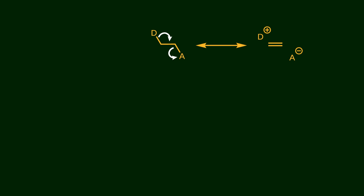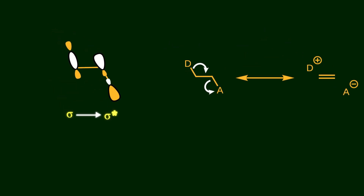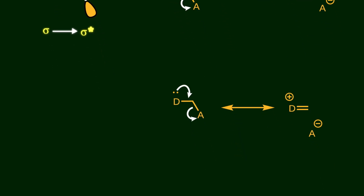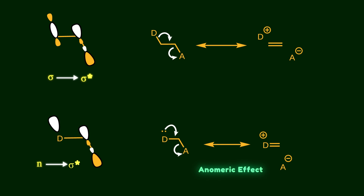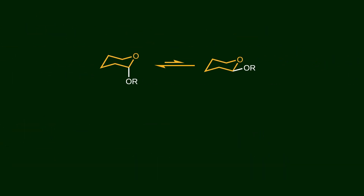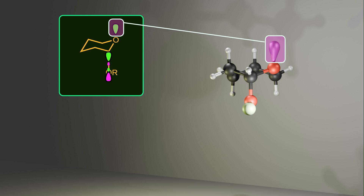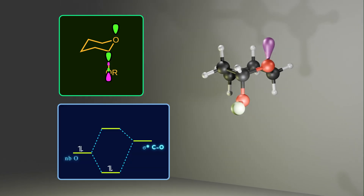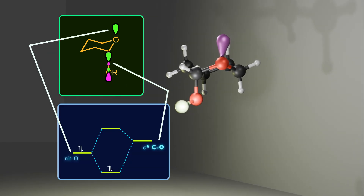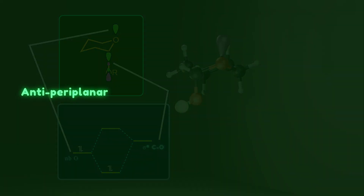Until now, we've understood stereoelectronic effects where electrons in a bond interact with an anti-bonding orbital of a good acceptor. But there is another type of stereoelectronic effect in which non-bonding electrons interact with anti-bonding orbitals. The anomeric effect is a good example. In this compound, the substituent in the axial position is more stable than in the equatorial position. The non-bonding electrons on the oxygen atom, and the carbon-oxygen bond in the axial position, are anti-periplanar to those non-bonding electrons — a good acceptor due to the high electronegativity of oxygen. This leads to orbital interaction and stabilization.